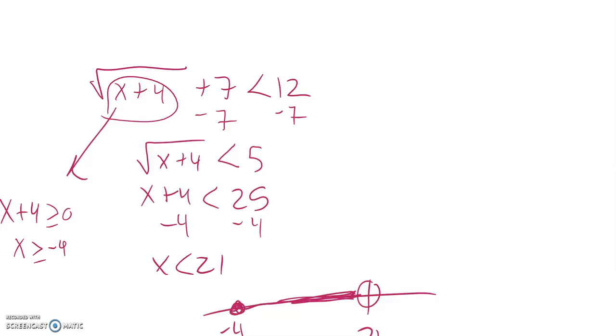So right here at negative 4, going that way. So my inequality is negative 4 is less than or equal to x, which is less than 21.